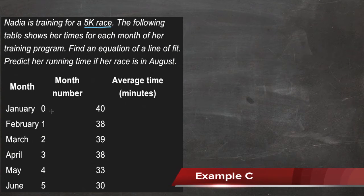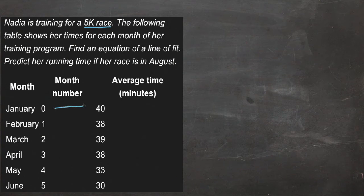We can see here, if we number the months 0 through 5, and take a look at her average time each month. In January, she took 40 minutes. In February, she practiced a little bit, got a little faster.